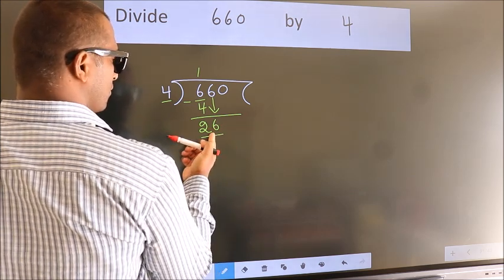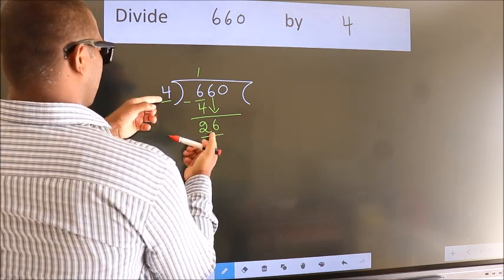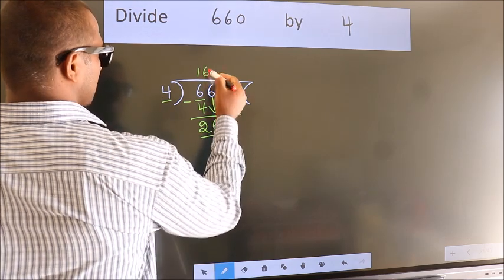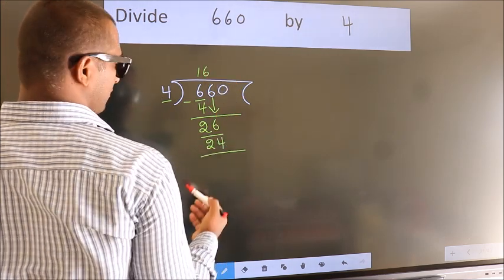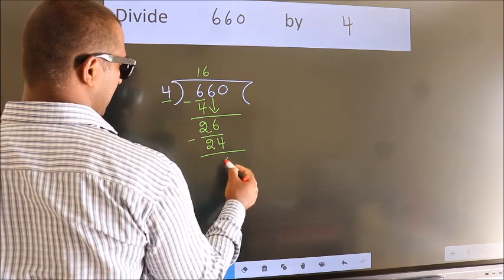A number close to 26 in 4 table is 4, 6, 24. Now, we subtract. We get 2.